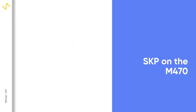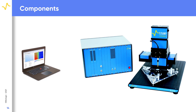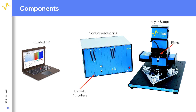So how is SKP implemented on the M470 with the SKP 470 module? The components used to perform SKP measurements on the M470 are shown. A control PC runs the M470 software, which interfaces with the instrument to set up and run the SKP experiments. The control electronics interface between the software, computer, and the various electronics required by the system. An XYZ scanning stage allows the probe to be approached to the sample in Z, follow sample topography if desired, and raster scan the surface in X and Y. These are automated to allow area maps of the contact potential difference to be produced. A piezo vibration actuator is required to vibrate the probe at known, repeatable amplitudes throughout the measurement, resulting in an AC signal which is then demodulated by the lock-in amplifiers.